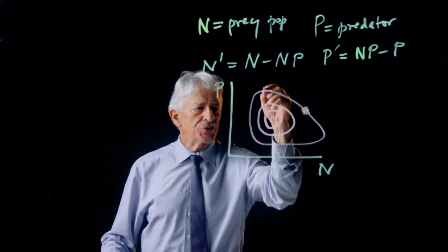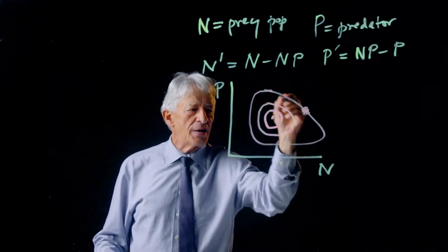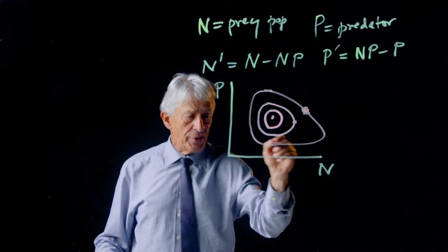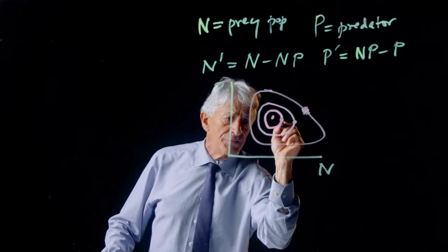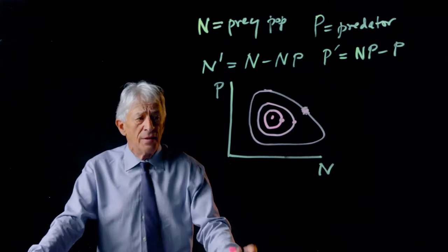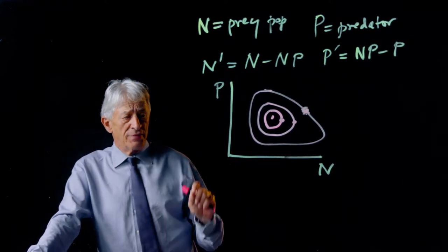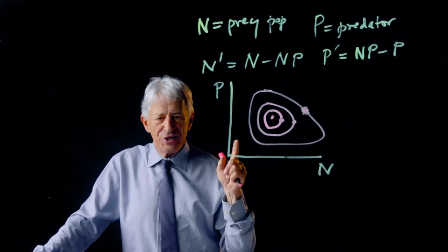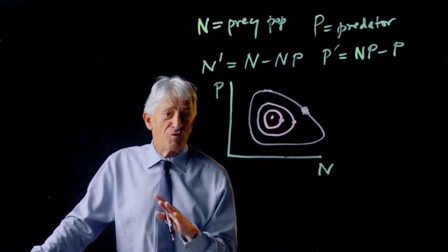If you choose this initial condition, you get this big oscillation. If you choose this initial condition, you get a smaller oscillation. If you choose this initial condition, you get a still smaller one. In other words, the system remembers its initial condition forever.